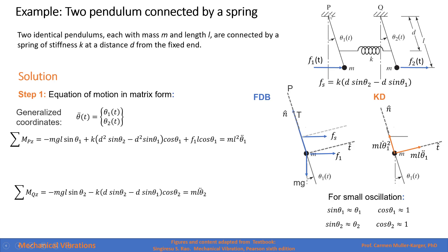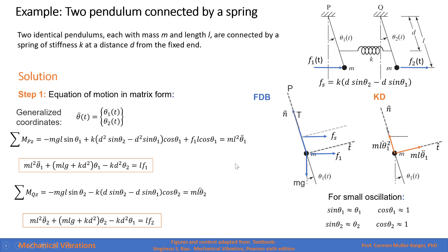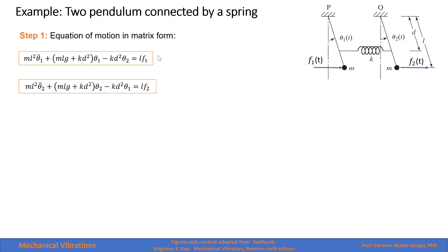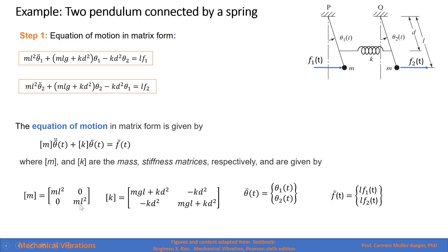We take moments at point P for pendulum 1 and at point Q for pendulum 2, and we get the equations shown here. Placing all terms depending on theta on one side and external force terms on the other, and linearizing by applying the small-angle condition, we obtain our two equations of motion. In matrix form, the mass matrix is diagonal and the stiffness matrix has a symmetric form.